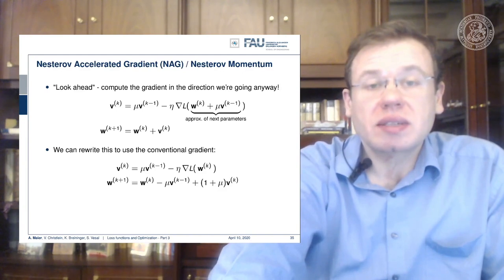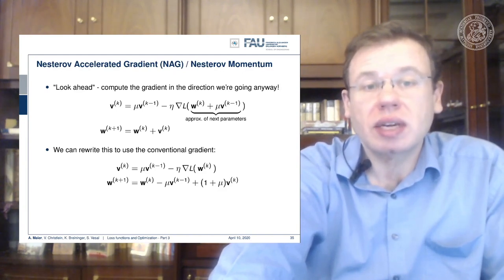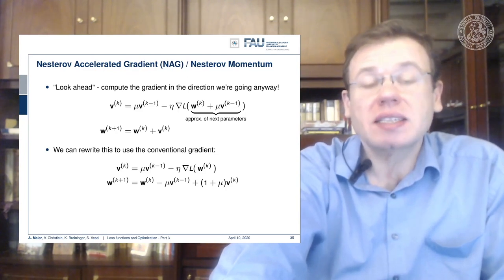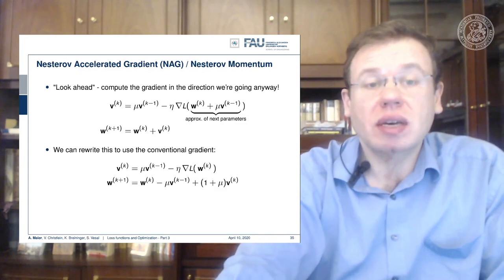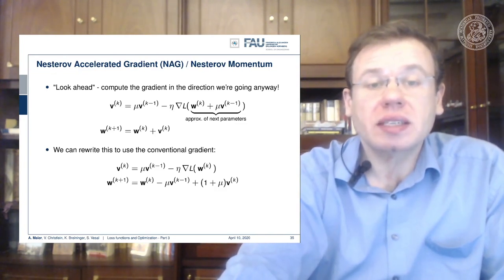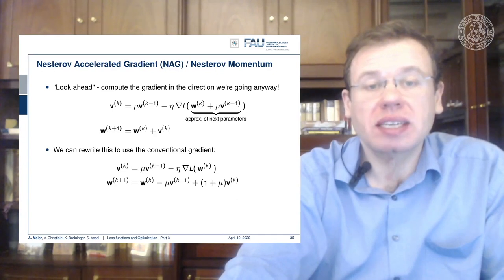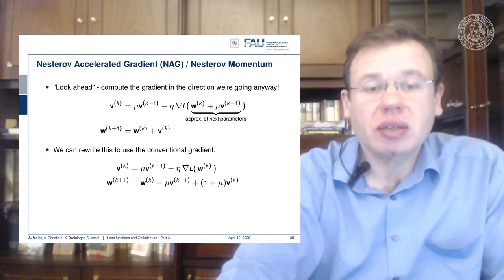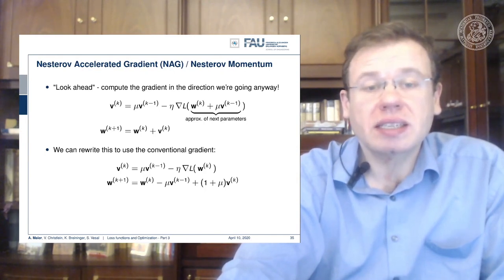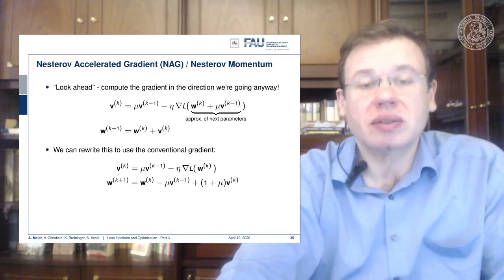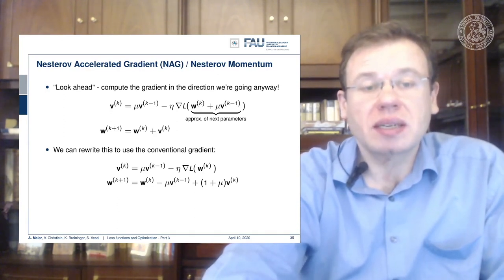We can also use a different kind of momentum: the Nesterov accelerated gradient, or Nesterov momentum. This performs a look-ahead — we also have the momentum term, but instead of evaluating the gradient at the current position, we add the momentum term before computing the gradient. We essentially approximate the next set of parameters using the look-ahead and then perform the gradient update. You can rewrite this to use the conventional gradient, putting the Nesterov acceleration directly into the gradient update, as this term will then be used in the next gradient update step.